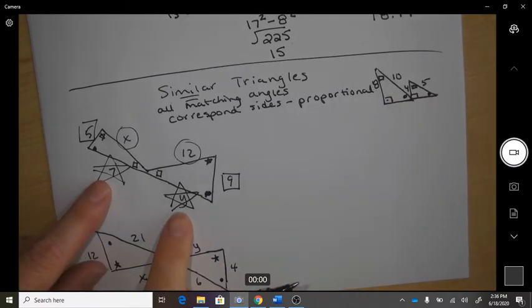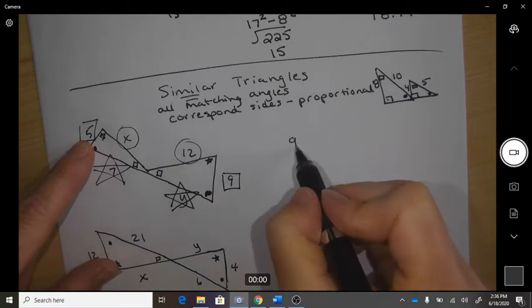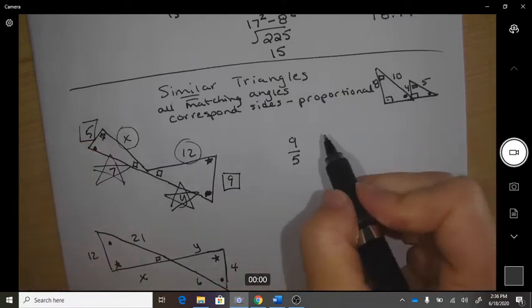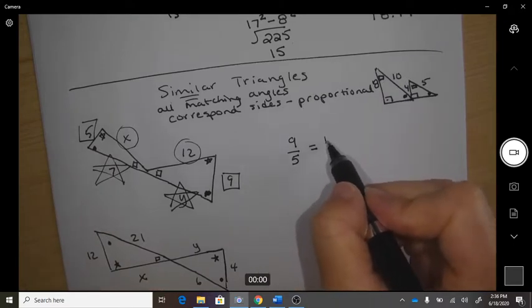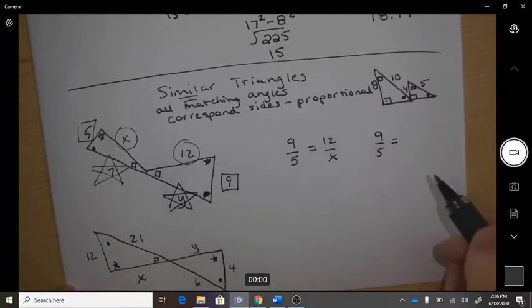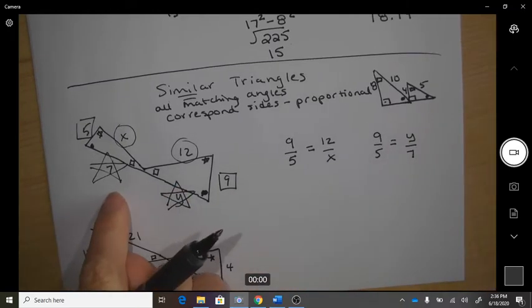So which ones can I match up? I can match up 9 and 5, so 9 to 5 has to be the same ratio as 12 to x. 9 to 5 also has to be the same ratio as y to 7. And you have to go in the order.